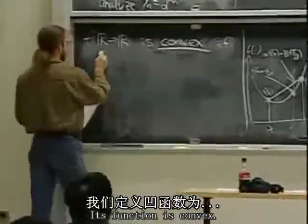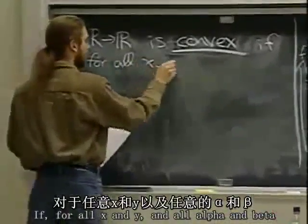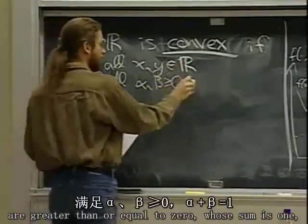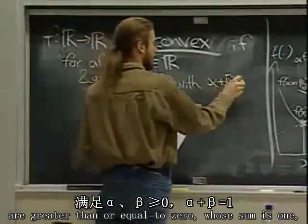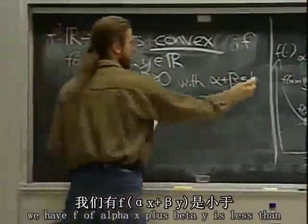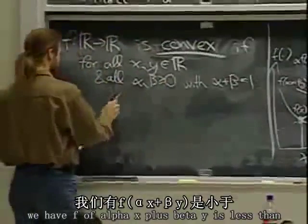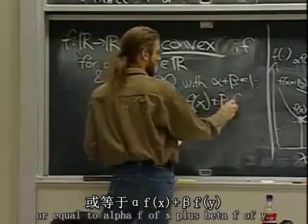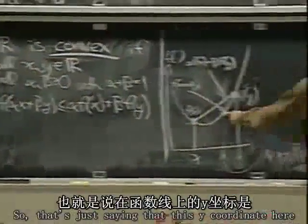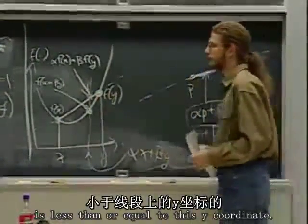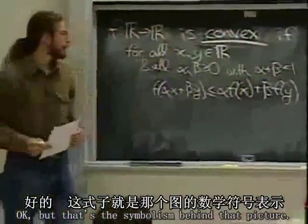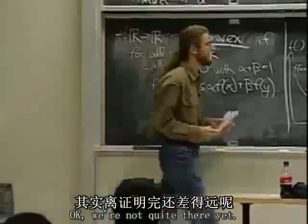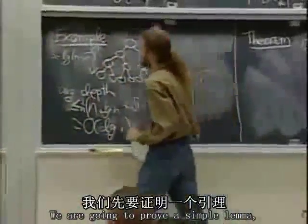So here's the definition: a function f is convex if for all x and y and all α, β ≥ 0 with α + β = 1, we have f(αx + βy) ≤ α·f(x) + β·f(y). That's just saying the y-coordinate on the curve is at most the y-coordinate on the line segment.